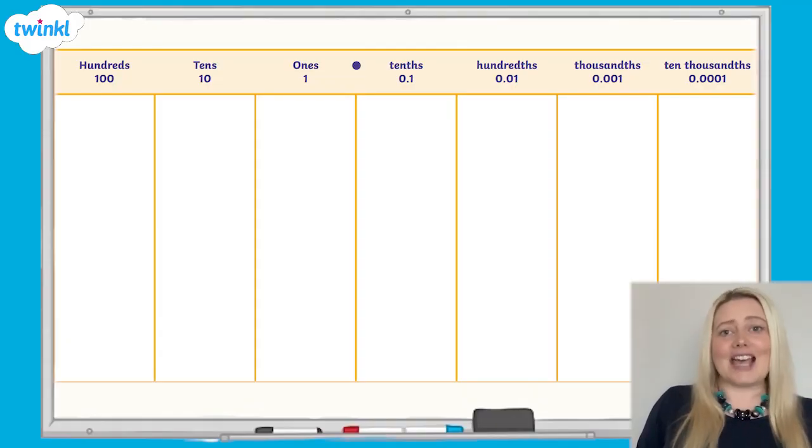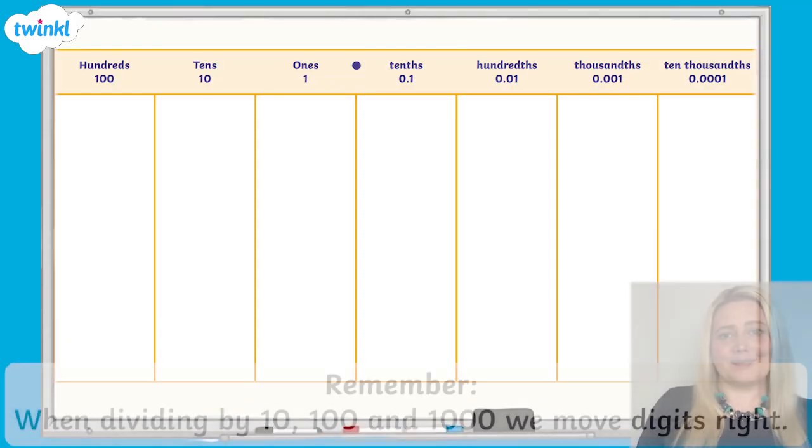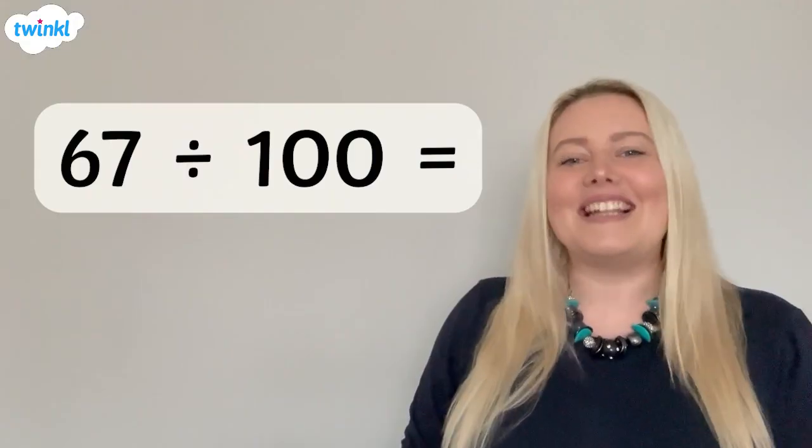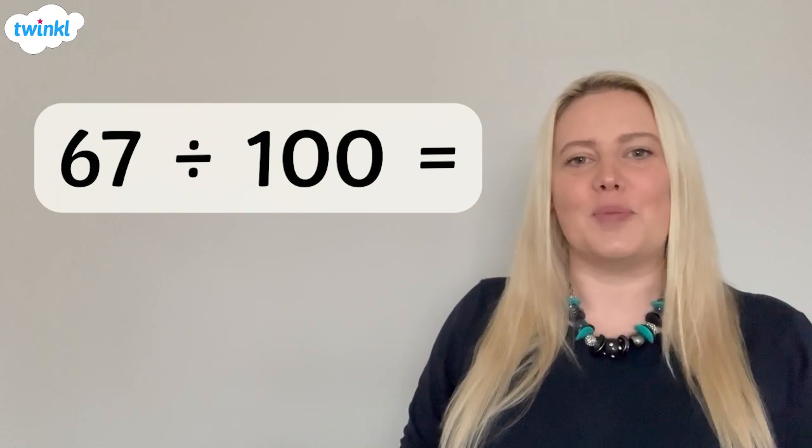We can use a place value chart to help us divide by 100. The value of each place value column is 10 times smaller than the section to its left. As the number moves one place value column to the right across the place value chart, each digit becomes 10 times smaller, or a tenth of the value that it was.